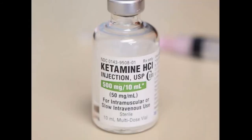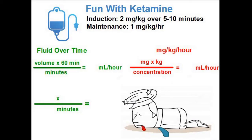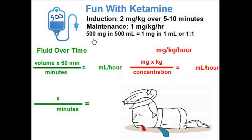Here's a standard bottle of ketamine that you find on a lot of ambulances. You can see that one vial has 500 milligrams in 10 milliliters. We're going to need to mix this into a larger container in order to do both the induction and the maintenance dose. So let's do this the easy way and use a 500 cc or 500 milliliter bag of saline. That means we're putting 500 milligrams of ketamine in 500 milliliters of fluid — one milligram in one milliliter, or a one-to-one concentration.